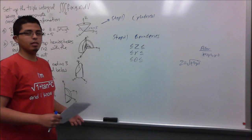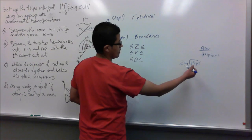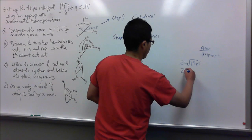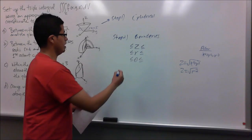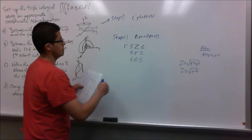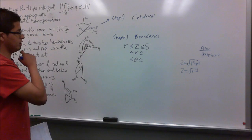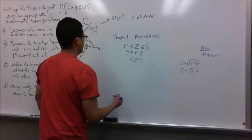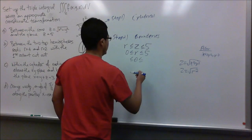Notice that the rest of the limits rely on r and theta. So I will use the polar coordinate equation x squared plus y squared equals r squared and substitute z equals the square root of r squared. Taking the square root gives r as the lower limit of z, and the upper limit is where the plane intersects at z equals 5.